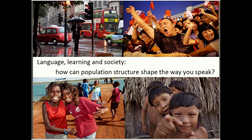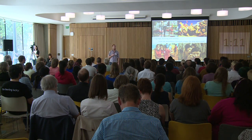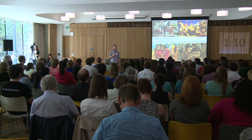So perhaps one of the reasons that Tariana is so complex is due to it only having 150 speakers. So what do I do? Well, first, I'm looking to see if there's any real evidence for a connection between population and other social structures and language complexity, and I'm doing this primarily by the means of experimentation.